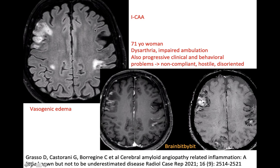This is a case of inflammatory CAA, where you can see on FLAIR areas of vasogenic edema — proven on DWI — with involvement of the cortex and subcortical white matter. There is enhancement of the leptomeningeals and microbleeds on the SWI, in this woman in her 70s presenting with dysarthria and impaired walking.